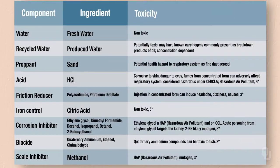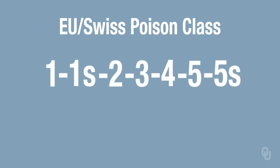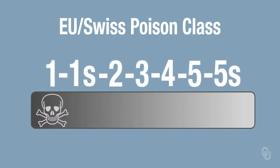The next table is, again, from the same well, but now shows the toxicity of the ingredients. One measure of toxicity listed in the table is the European Union's Swiss poison class, which is a numeric value from 1 to 5. The smaller the value, the more toxic the ingredient.